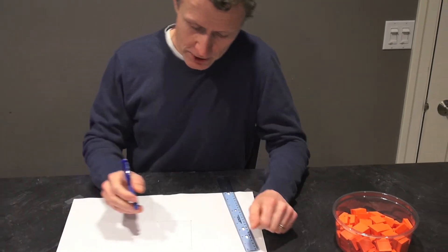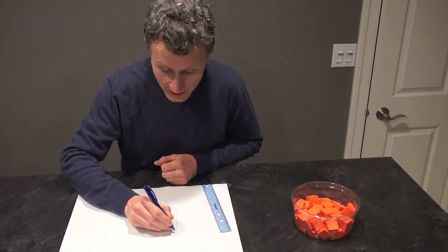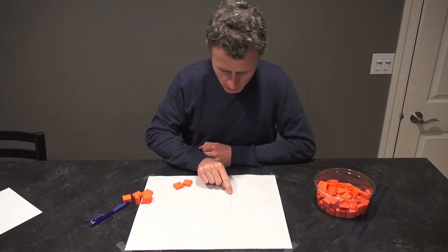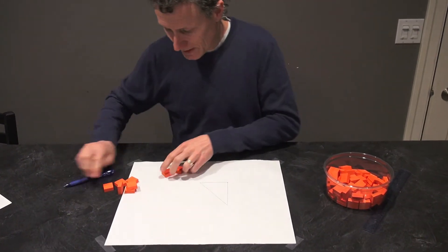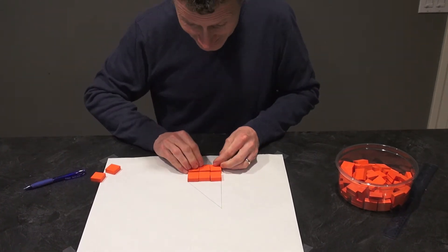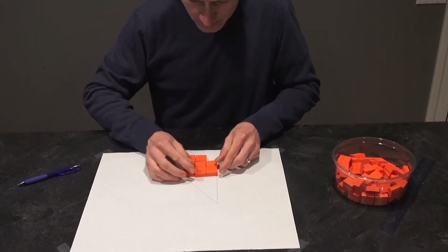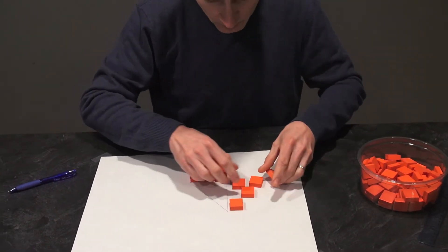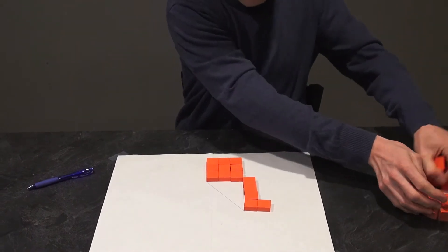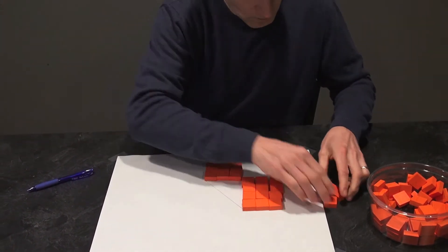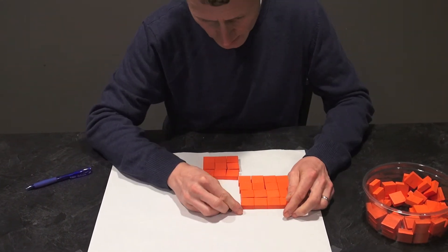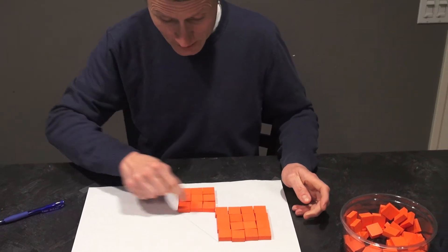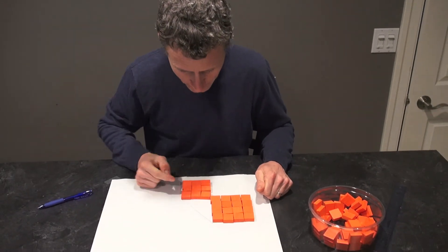The Pythagorean relation doesn't have to do with the lengths of the sides — it has to do with creating a square on each side. Using tiles to visualize this: if we make a square on the side that's 3, we need 9 tiles because the square of 3 is 9. On the side that's 4, we need 16 because the square of 4 is 16. The two shorter sides of a right triangle are called the legs — the ones that make up the right angle.